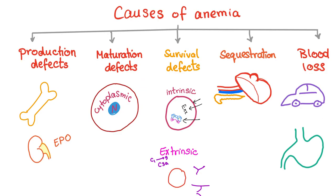Number two: maturation defects. These can be either cytoplasmic or nuclear. Cytoplasmic maturation defects include problems in hemoglobin synthesis, such as iron deficiency anemia, or problems in globin synthesis, such as thalassemia. Nuclear defects involve DNA synthesis problems such as B12 deficiency, folate deficiency, and myelodysplasia.